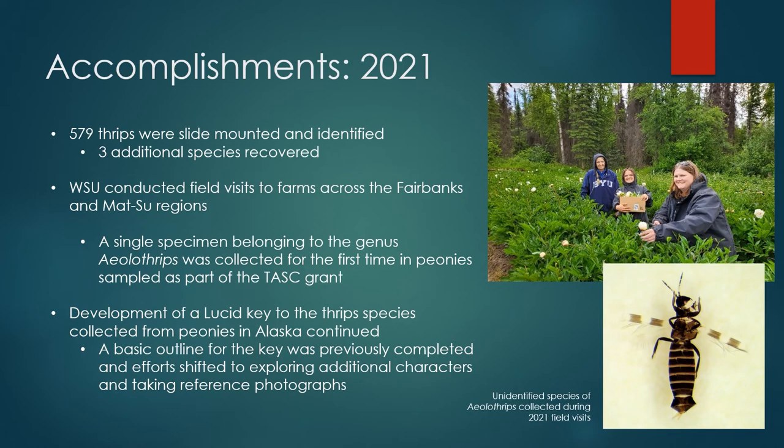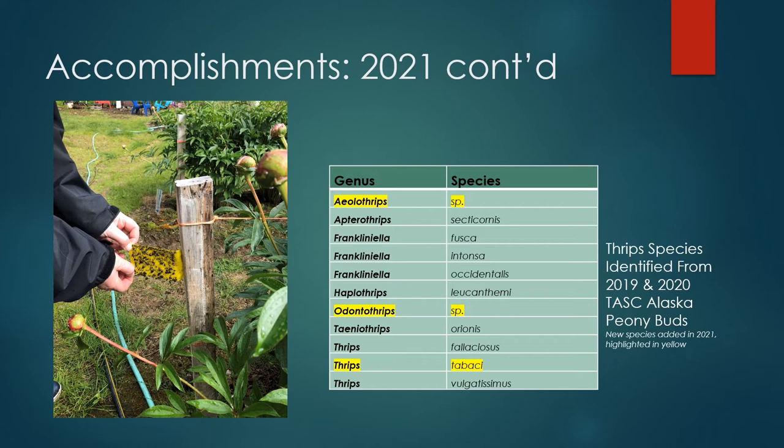After completing the identifications of the 2020 thrips samples, the total number of species documented from Alaska-grown peonies was 11 species in seven different genera. Several of these species were represented by one or two specimens. Male thrips are often uncommonly collected, but male representatives for five of the 11 species were collected during this study.